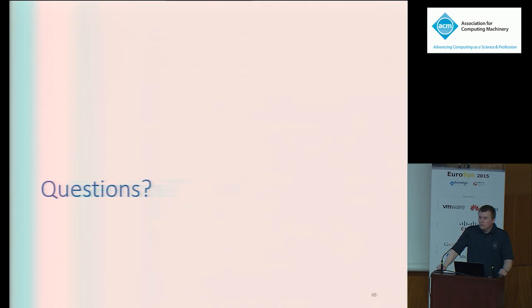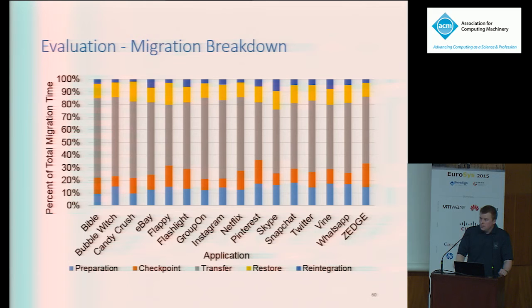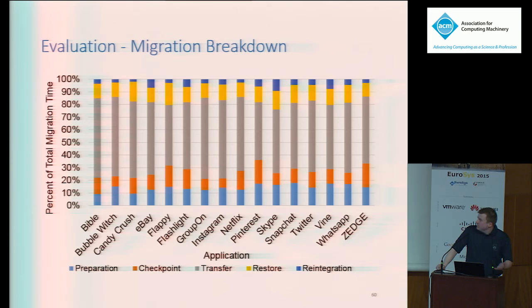Question from Darren Murray, Google: Could you go back to the slide on the breakdown of migration overhead? Thinking about this morning's talk on application-assisted migration of Java apps, do you have a feel for how much of the transfer time is moving garbage around? Answer: We've done a little bit of experimenting with post-copy and such. There's a fair amount of garbage, especially due to the inefficiencies of Dalvik. Using ARC, the images are much smaller, but we don't have results for that. Some of it's inherent — for example, you've got Snapchat there.